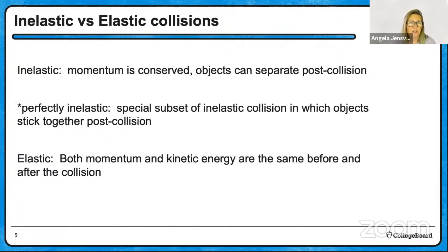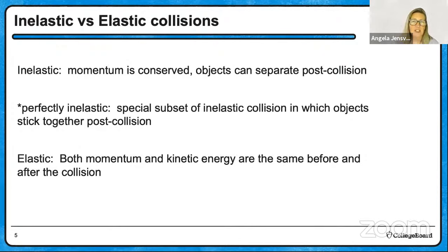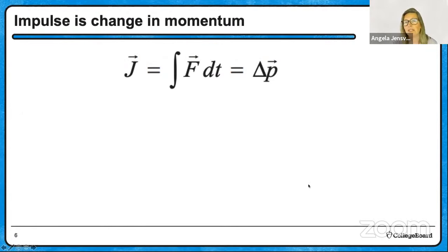There's a special subset called perfectly inelastic collisions — that's when the two objects stick together. It doesn't mean objects must stick together for a collision to be inelastic; it just means if they do stick together, you know for sure it's inelastic. Elastic collisions are where both momentum and kinetic energy are the same before and after the collision. If momentum is not conserved — if there's a non-zero net force — the change in momentum is called impulse, found by integrating force with respect to time.